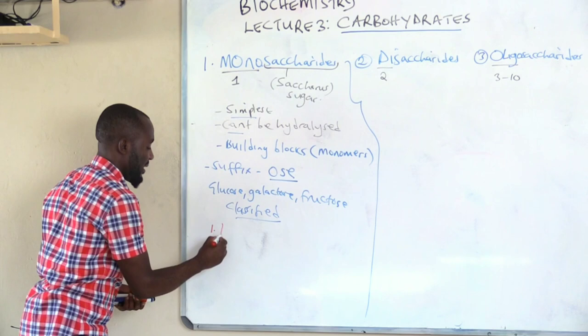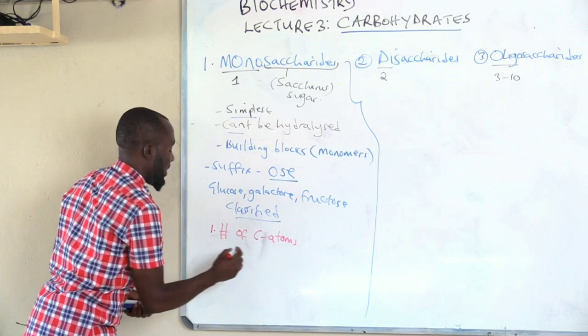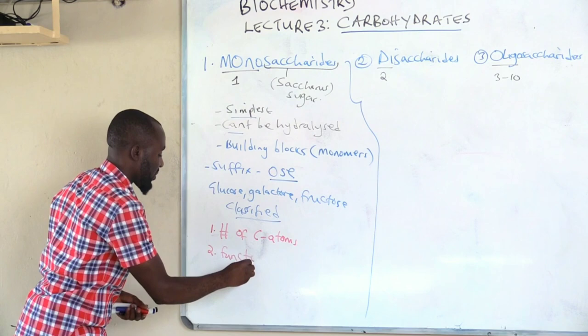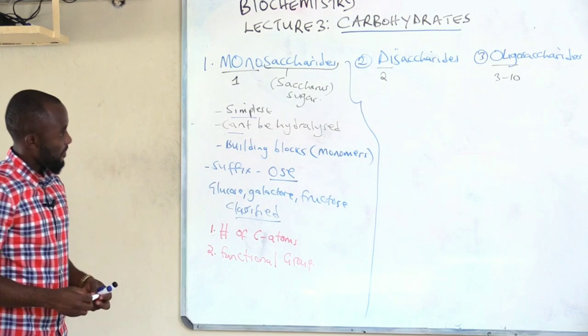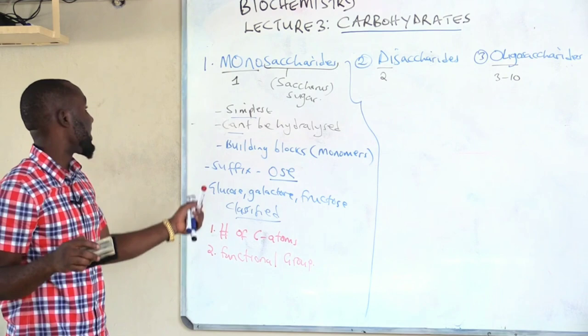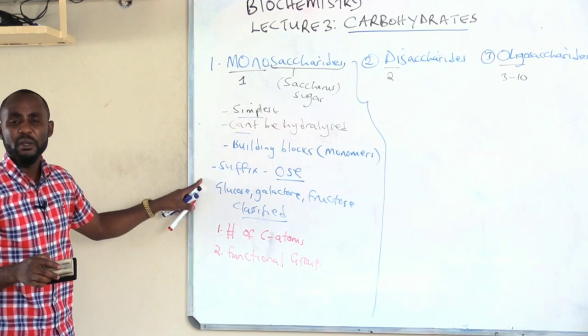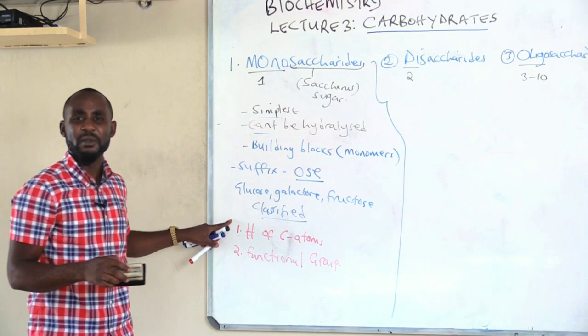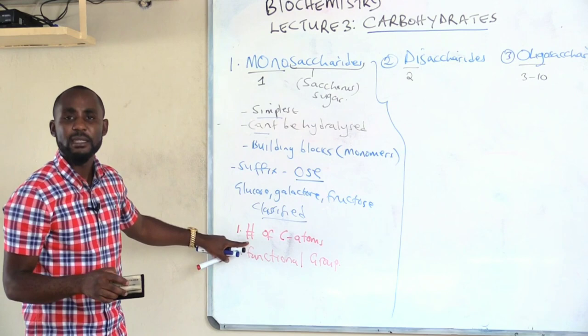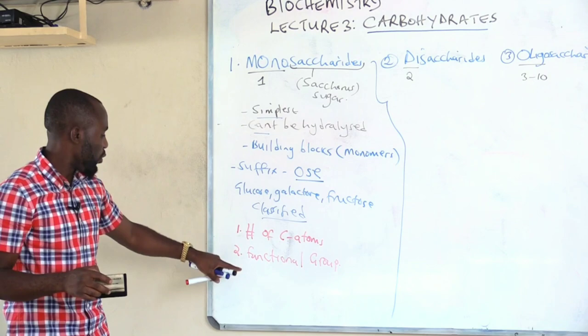We classify monosaccharides in two ways: number one, based on the number of carbon atoms they have; number two, based on the functional group. We are still looking at carbohydrates, with our first discussion being monosaccharides. After monosaccharides, we shall shift to disaccharides. We have stated the definition and we shall now go into the details.